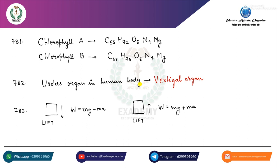तो Chlorophyll A और Chlorophyll B का formula क्या होता है? C55, N4, Mg — यह तो दोनों में same होता है। लेकिन Chlorophyll A में H72, O5 होगा, और Chlorophyll B में H70, O6 होगा। तो अगर H में बढ़ा है तो O में घटा है, और H में कम हुआ तो O में बढ़ा।